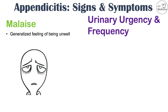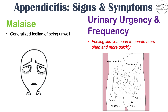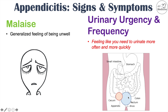Another sign or symptom is urinary frequency and urgency — feeling like you need to urinate more often and more quickly. Looking at a diagram of the gastrointestinal system, the appendix is in the right lower quadrant jutting off the large intestine, and the bladder is in front of the gastrointestinal system. If the appendix becomes enlarged and inflamed, it can start to push on the bladder, causing irritation that makes the patient feel like they have to urinate more frequently and urgently. That is why urinary frequency and urgency can be seen in appendicitis.